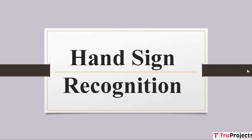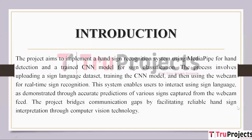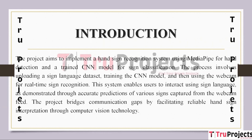Hello, welcome to True Projects. In this video we are going to explain about hand sign recognition. The project's goal is to create a hand sign recognition system employing trained CNN models for sign categorization and MediaPipe for hand detection. A sign language dataset must be uploaded, the CNN model must be trained, and the webcam must be used for real-time sign recognition. This technology facilitates sign language communication between users, as shown by the precise predictions of numerous signs recorded from the webcam feed.